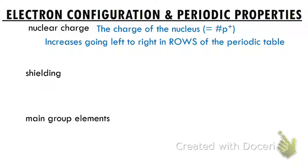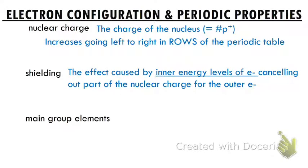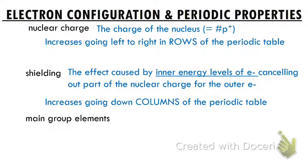You might think that nuclear charge also increases as we move down the periodic table in a column, because the atomic number does increase as we go down. But we're about to see how the shielding effect actually cancels that out. Shielding is the effect caused by inner energy levels of electrons cancelling out part of the nuclear charge for the outer electrons — they're literally protecting and shielding them. Shielding increases as we go down the columns of the periodic table, because each of those rows adds an extra energy level around the atom, and that's an extra level of shielding.